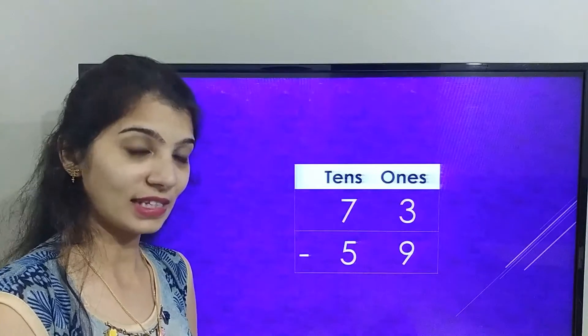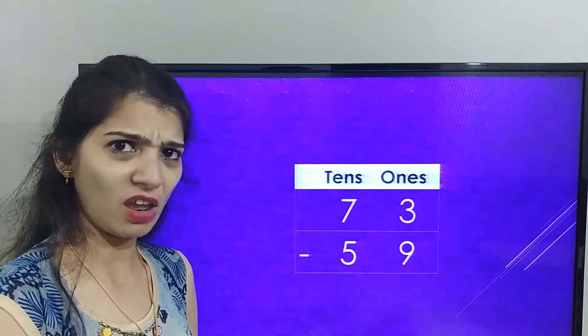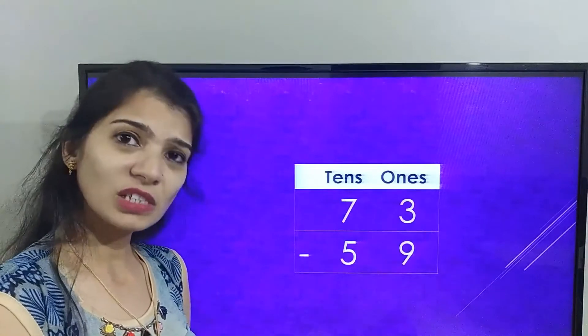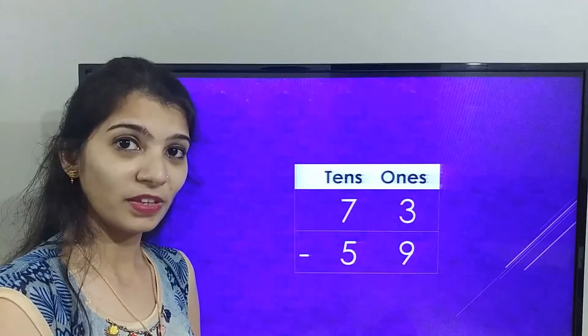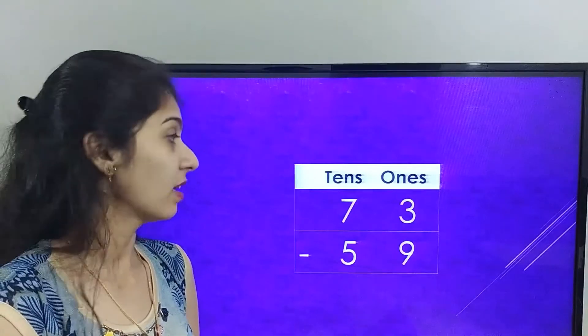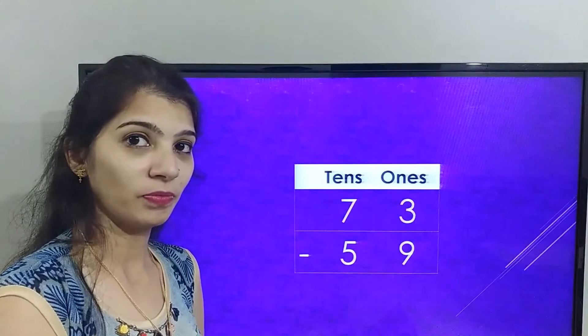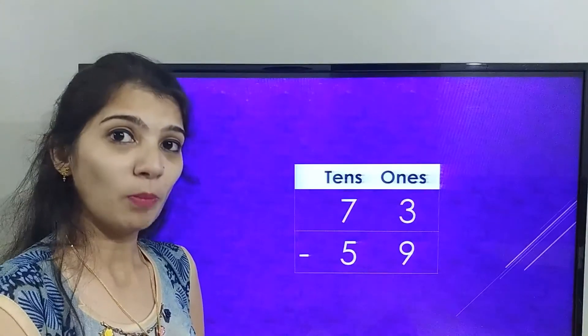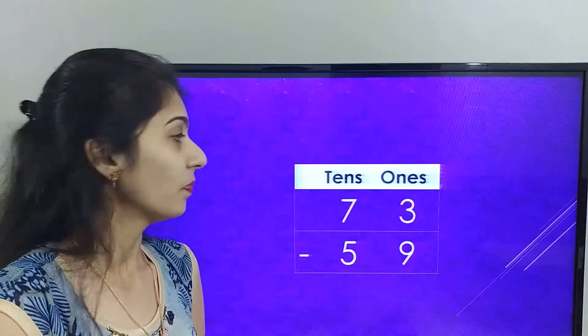Where 3 is a smaller number and 9 is a bigger number, we cannot minus bigger number from smaller number. So 3 will borrow from the neighbor. So whose 3's neighbor? That is 7.